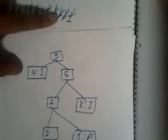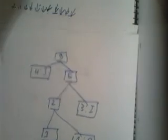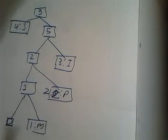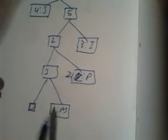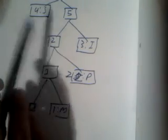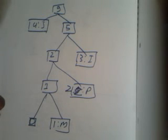When we add P, it becomes 2. So this also becomes 2. We check the node if it is valid: 0, 1, 1, 2, 2, 3, 4, 5, and 9 — the tree is still valid.